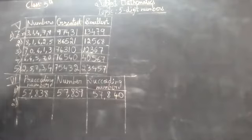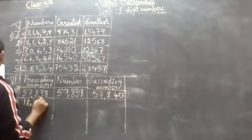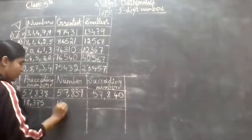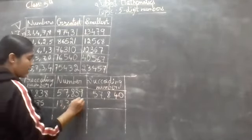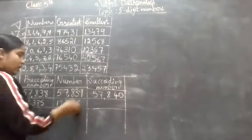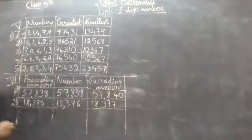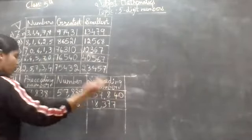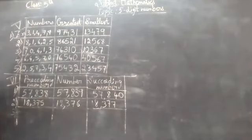Next, the second one: they have given the preceding number as 18,375. What should be the number? After 75 is 76, so the number is 18,376. And after 76? That is 77, so the succeeding number is 18,377. It is a continuous number: 75, 76, 77.